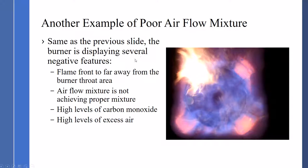As the previous slide, the burner has the same negative features, so the flame front is too far away from the burner throat, air flow mixture is not achieving proper mixture, high levels of carbon monoxide and high levels of excess air. Also, there was deficiencies in the burner throat tile and was not uniform. So you can see the dark areas and these are the areas here where we are getting the temperature onto the throat area.